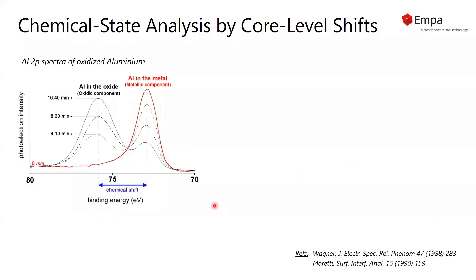We can now consider the chemical state analysis by core level shifts, which is illustrated here for the oxidation of aluminum. Before oxidation, we have aluminum in the metal. And when we oxidize, the thin oxide film grows on top.